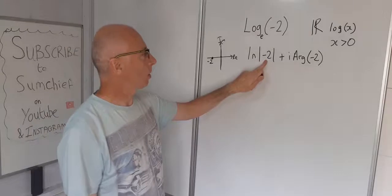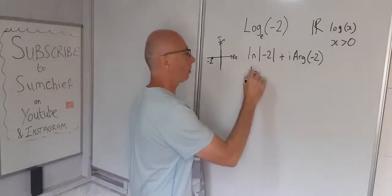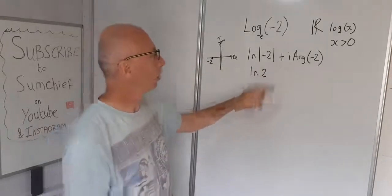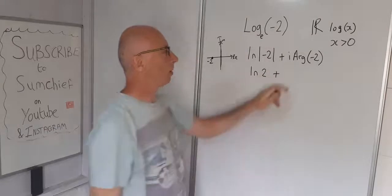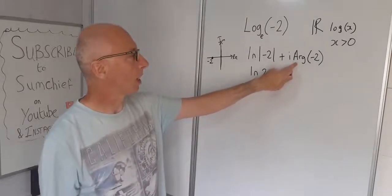Okay let's deal with this one first. That's the easiest part. So basically we've got natural log of 2. That's as simple as that. That's a real value. Plus now argument with a capital A, that's principal argument, so minus 2.